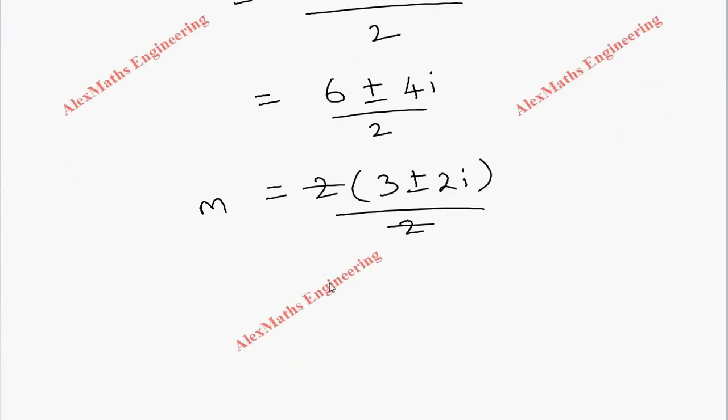It is of the form α ± iβ. By comparing this, we come to know the value of α is 3 and β is 2.